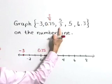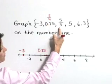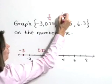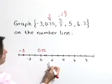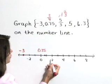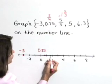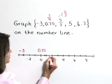We also have the number five-thirds. Another way to write that is one and two-thirds, so that's a number between one and two. It's two-thirds of the way between one and two.